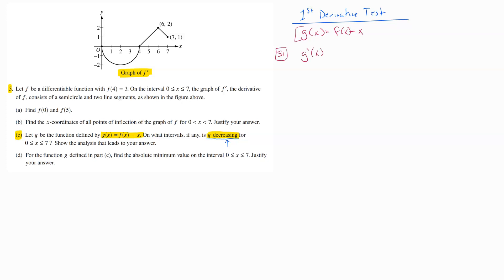The derivative of G would just be called G prime. The derivative of F would just be called F prime of X, and then the derivative of X, that's a power rule that would end up just being negative one.